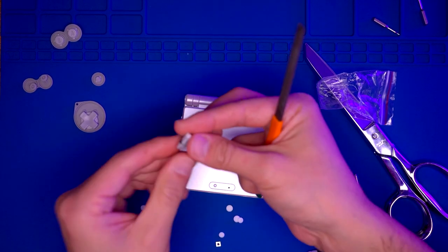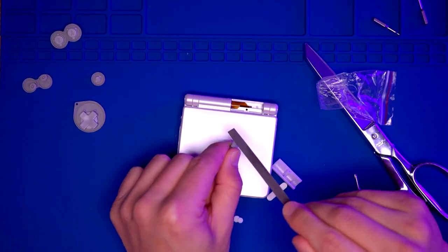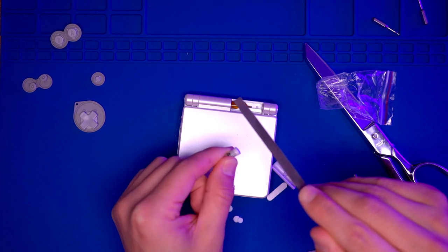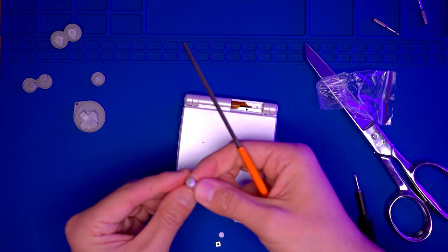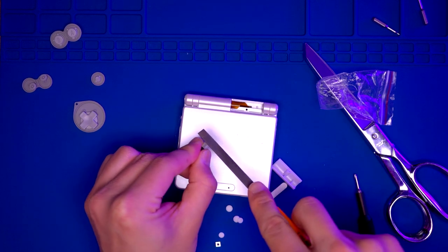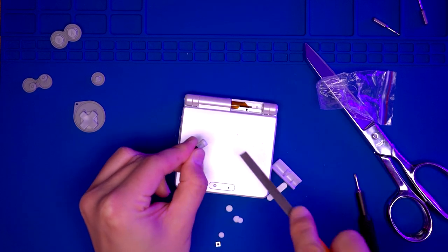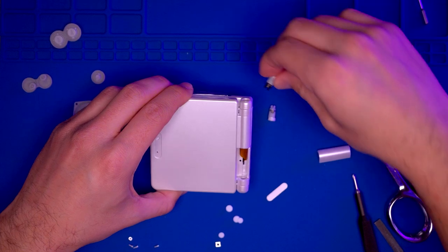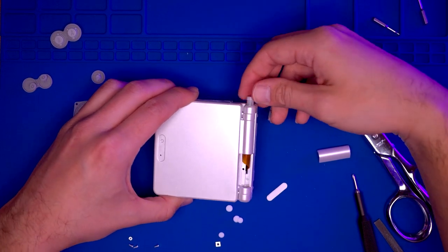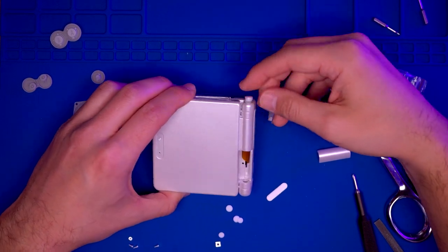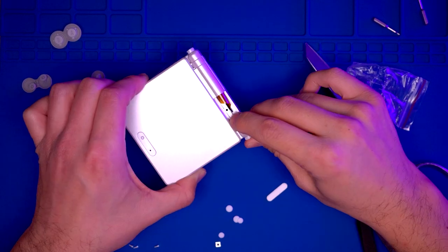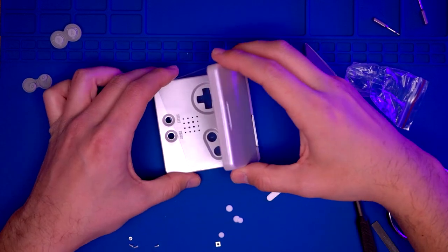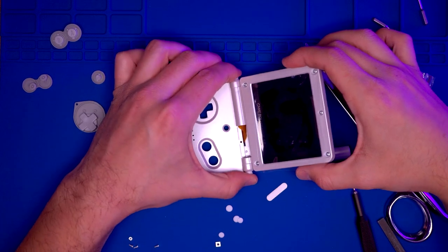Here you can see I have my file and I'm just going to file down those burrs. Just to make sure we have a nice smooth surface so that these hinges slide right in. Basically there is a key for the hinges, so they only go in one direction. We're just going to set them in initially and lightly press them in.